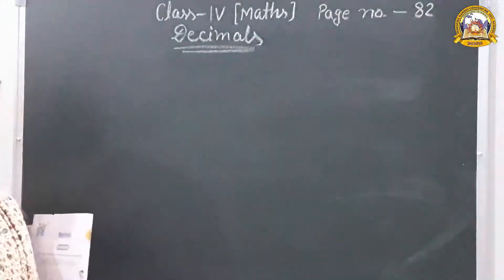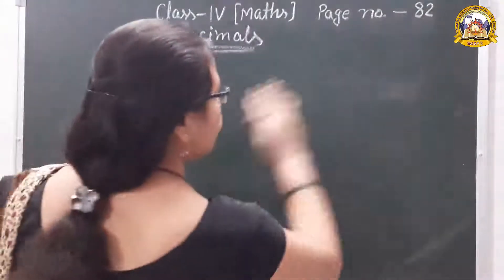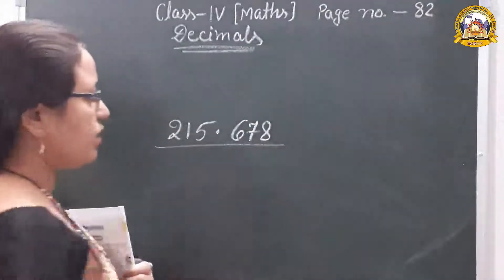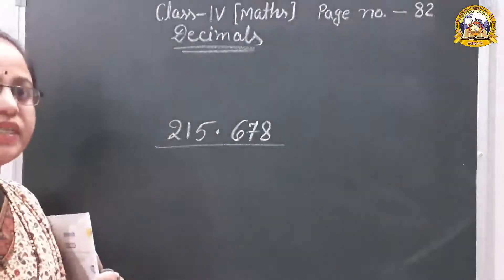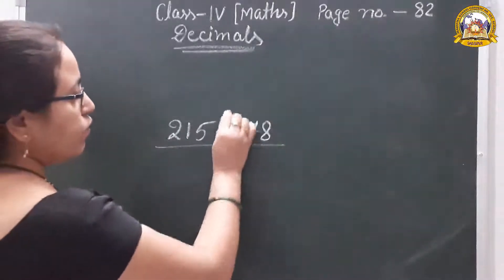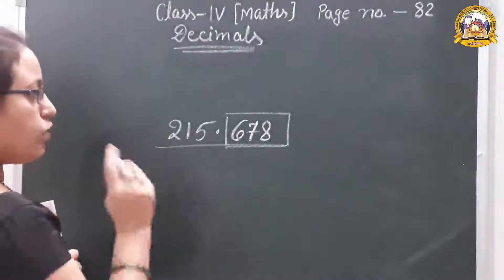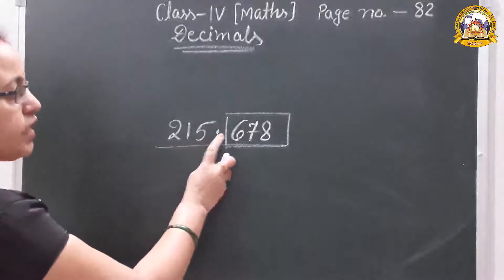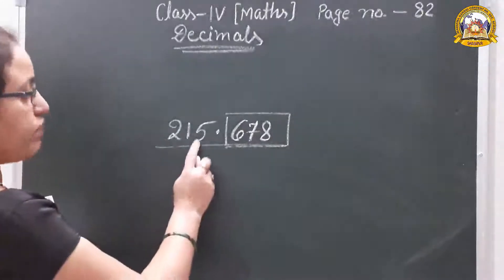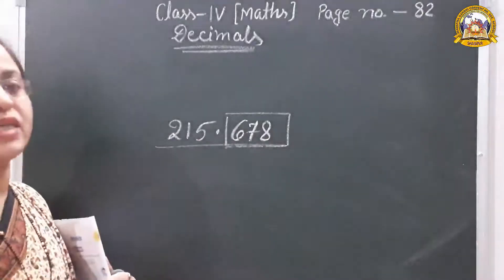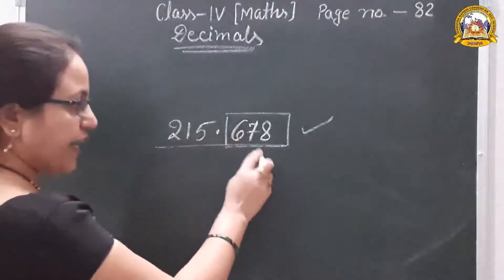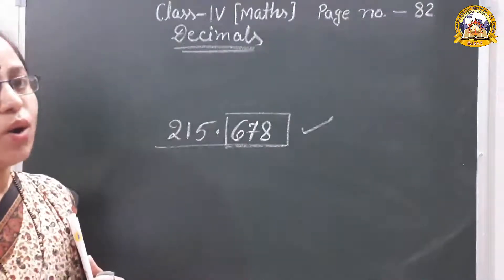Now, how do we read a decimal number? What is the correct way? Take 215.678. Before the decimal is the whole part, so we read it as a full number: two hundred fifteen. After the decimal, we read the digits separately: six, seven, eight. So the correct way is 'two hundred fifteen point six seven eight.' We cannot read it as 'two hundred fifteen point six hundred seventy-eight' — that is the wrong way.